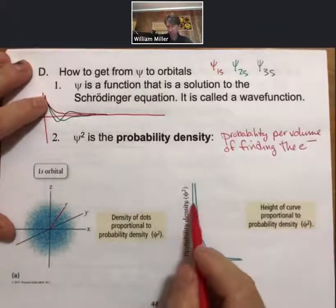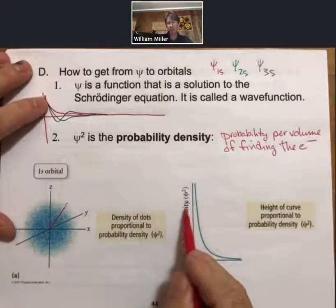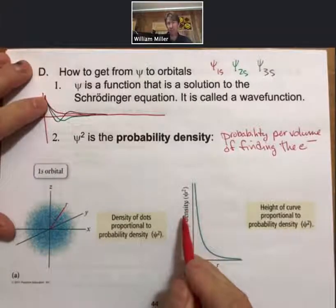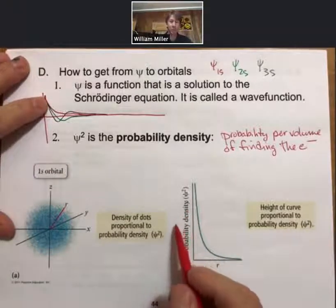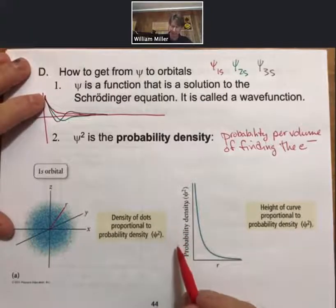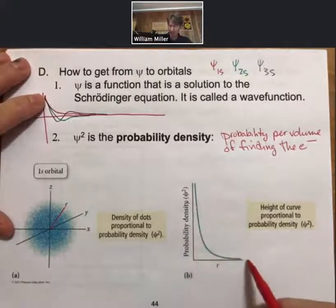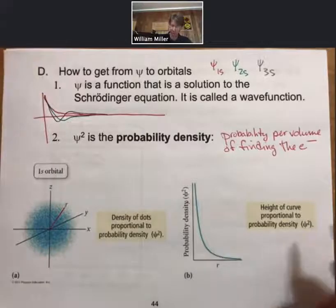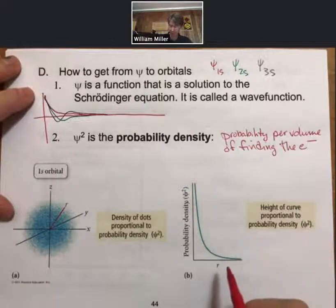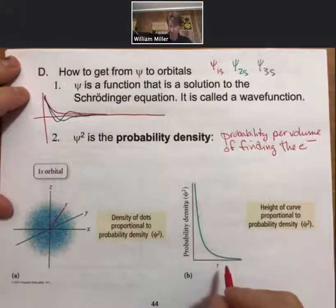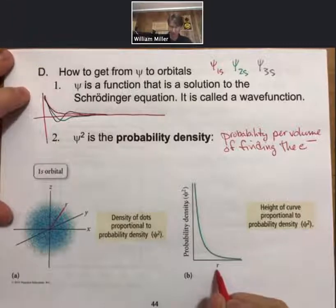And the probability is at a max closest to the nucleus. So that is the place closer to the nucleus is where you are most likely to find the electron. And again, it decays exponentially or some form of exponentially as you get away from the nucleus. And this is radius away from the nucleus.